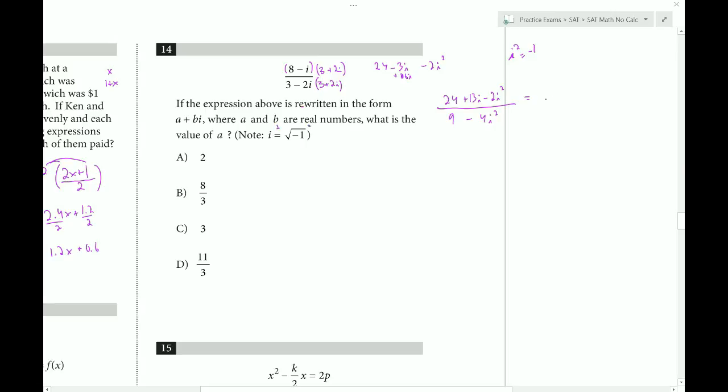Now we realize that i squared would have to equal minus 1. If you just square both sides of this, you can convince yourself of that. Then you can substitute minus 1 in everywhere you see an i squared. So you get 24 plus 13i minus 2 times negative 1. Then you get 9 minus 4 times negative 1. So you get 24 plus 13i. And then minus 2 times minus 1 is plus 2. And then minus 4 times minus 1 is plus 4. So you get 24 plus 13i plus 2. So this should actually be 26. Divided by 9 plus 4 which is 13. We can divide that 13 on both separately since it's a common denominator. 26 over 13 is 2. And this just leaves i. So 2 plus i is the result. And they want the value of a where it's a plus bi. So if it's a plus bi, then the coefficient is 2. So we choose choice a.